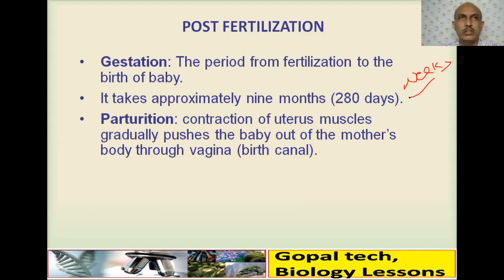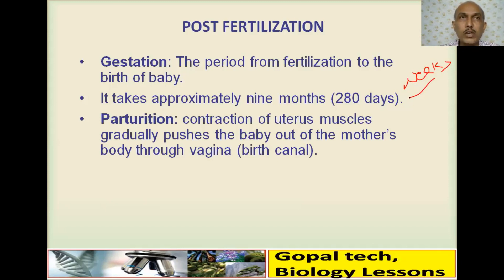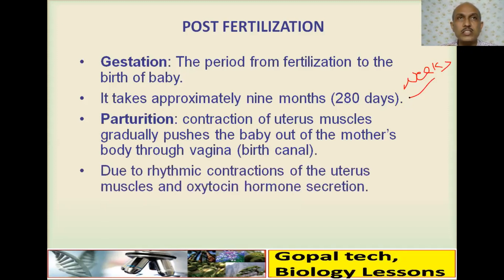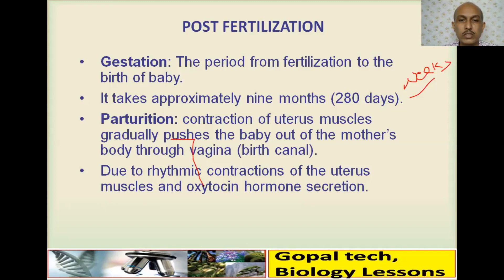Parturition is when the fully developed baby is delivered. There is a huge contraction of the uterine muscles, which causes labor pain and pushes the baby out of the mother's body through the birth canal or vagina. This happens due to rhythmic contraction of the uterine muscles and hormone release, including oxytocin and relaxin.